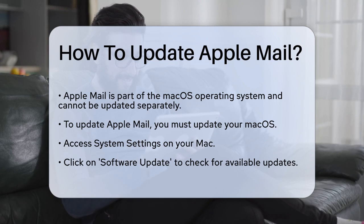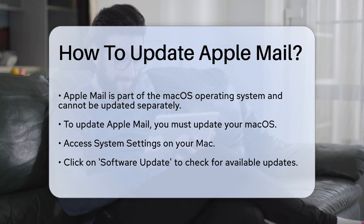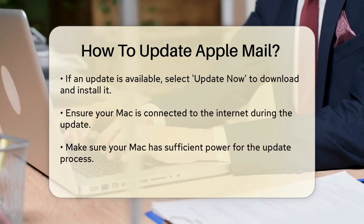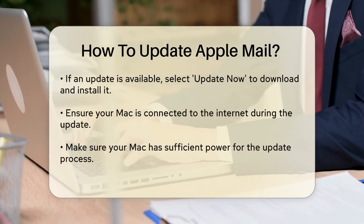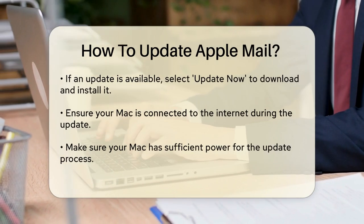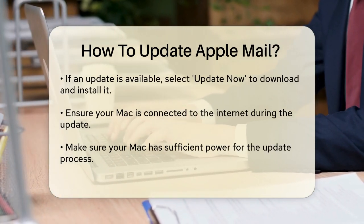To update Apple Mail, you need to update your macOS. Here's how you can do it. Go to your Mac System Settings and click on Software Update to check if there are any available updates. If an update is available, click Update Now to download and install it. Make sure your Mac is connected to the Internet and has enough power to complete the update process.